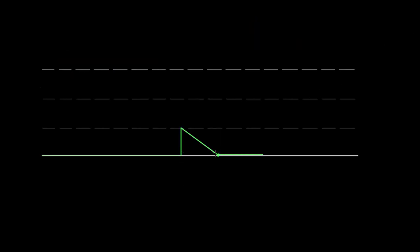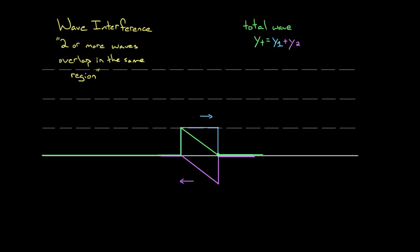This technique of adding up the values of each wave at a given point is called the superposition principle — an intimidating name for something actually pretty simple. To find the total wave, you just add up the values of the individual waves. Recapping: wave interference refers to the situation where two or more waves overlap in the same region. To find the total wave while they're overlapping, use the superposition principle: add up the values of the individual waves at a given point to find the value of the total wave at that point.